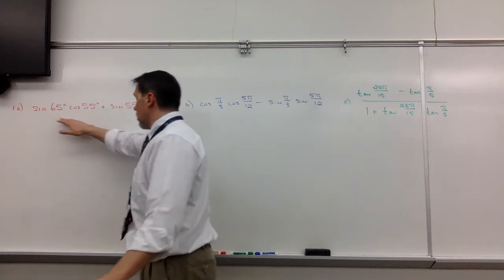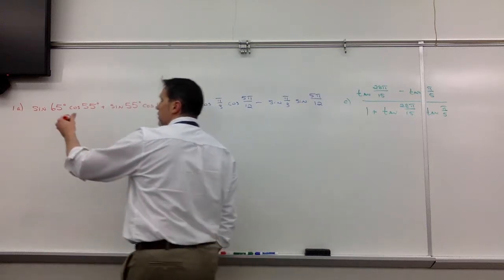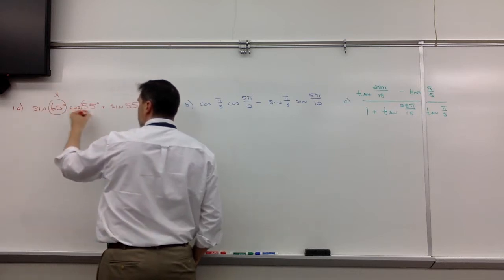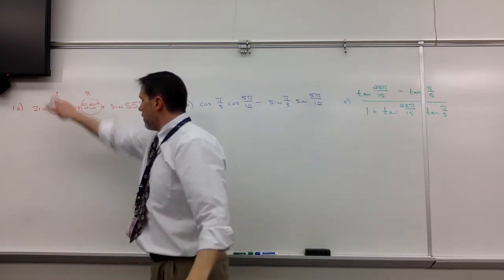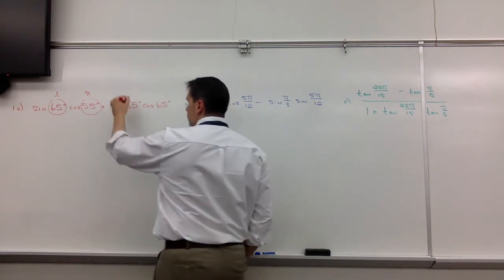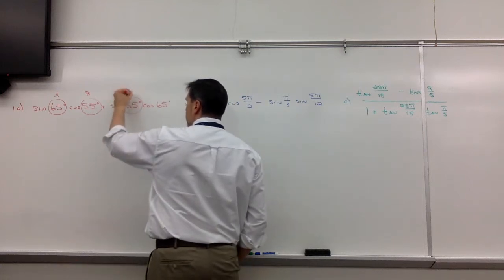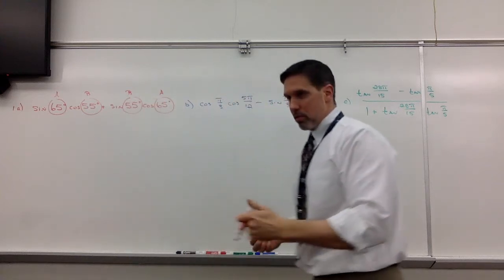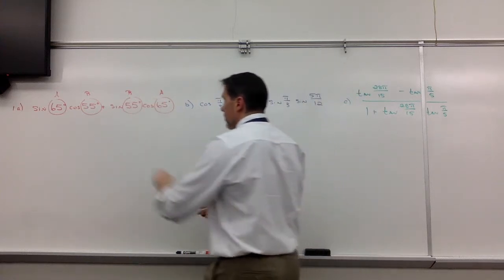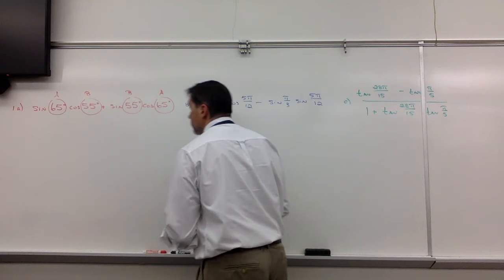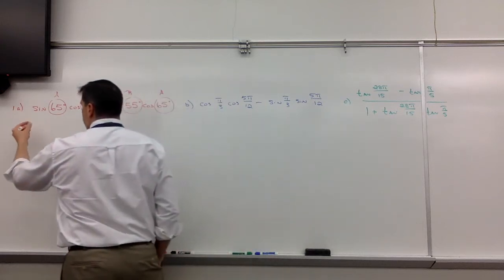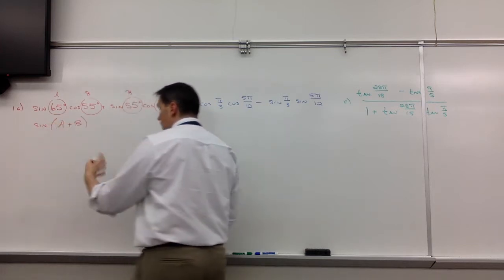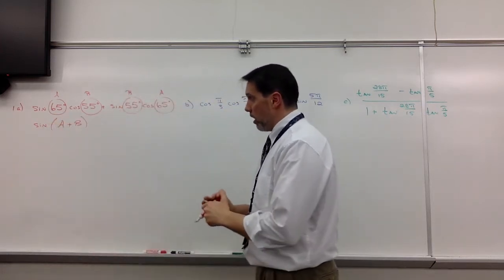Now these problems are set up in such a way where if you just recognize that we replace the 65 with A and the 55 with B, you can see that this is an exact representation of your sine sum form of addition. So what we're thinking is this is no different than sine of A plus B. I mean, that's in essence what this is an expansion of.